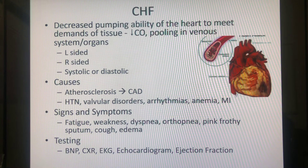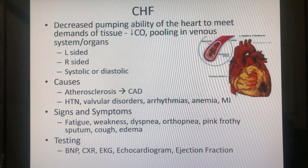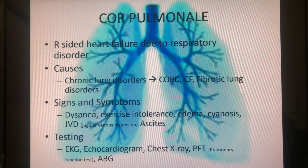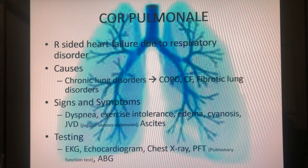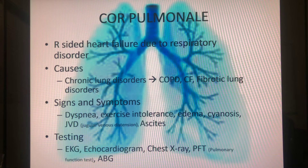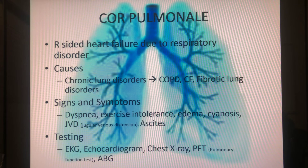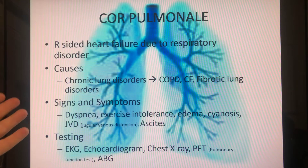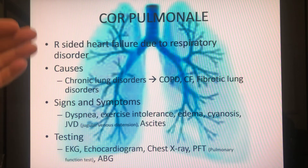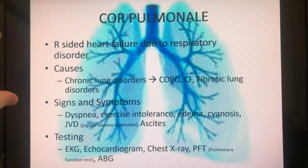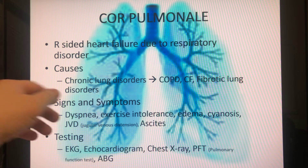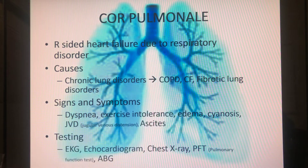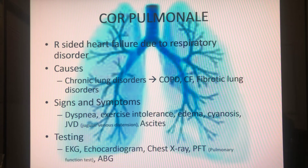Right-sided heart failure has its own special name: cor pulmonale. On this slide, the heart is shown in the middle of the lungs — and when you have right-sided heart failure, you need to go back to what caused it in the first place. Most commonly that's some kind of chronic obstructive pulmonary disease, though it can also include cystic fibrosis or fibrotic lung disorders like silicosis or coal miner's lung.